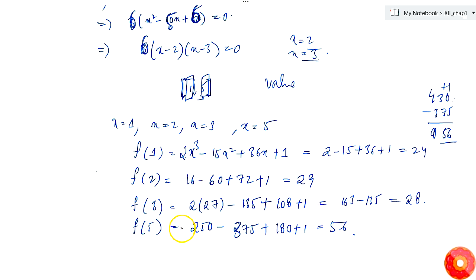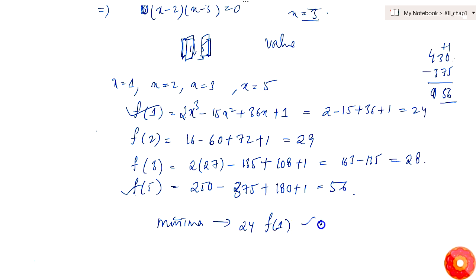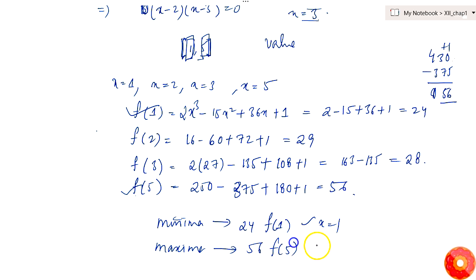As we can see, f(5) is maximum and f(1) is minimum. So the absolute minima is 24, that is f(1) at x = 1, and the absolute maxima is 56, that is f(5) at x = 5.